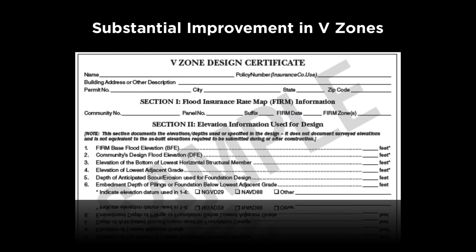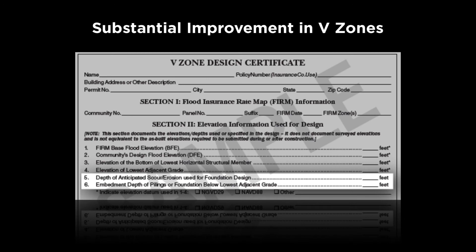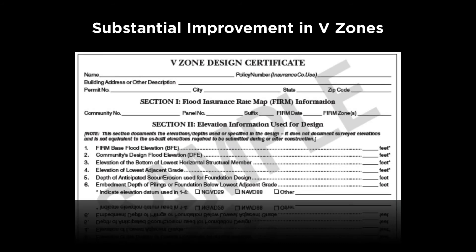Another issue is whether buildings undergoing substantial improvement need to get a V-Zone design certificate. V-Zone design certificates are typically produced before the building is constructed to certify proper design. But once the building is built and substantial improvement is planned, a V-Zone certificate is still always required so that an engineer can sign off on the improvements, certify that there are breakaway walls if applicable, and confirm the building is being designed properly. Fields 5 and 6 near the top of the form — depth of anticipated scour or erosion and embedment depth of pilings or foundation — do not need to be entered, since the new engineer is only certifying the improvements. CRS will not count this as an error for substantial improvement situations.